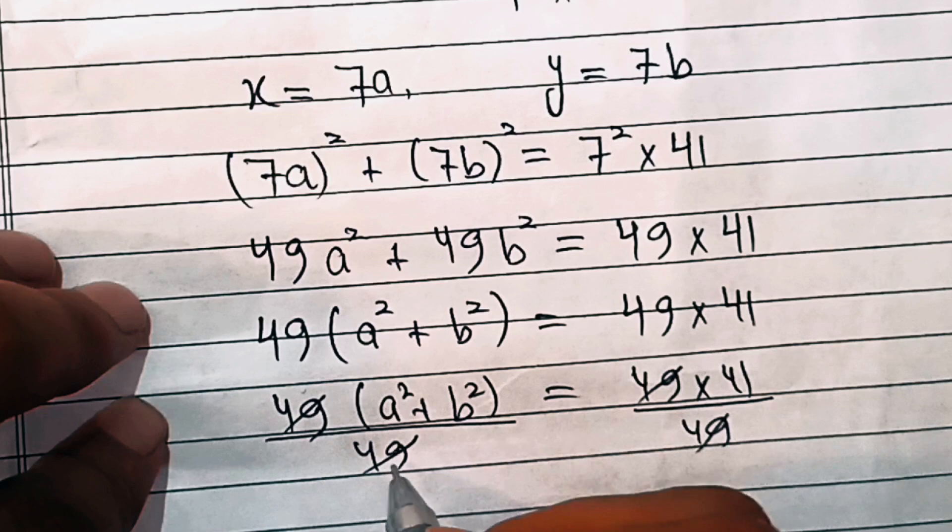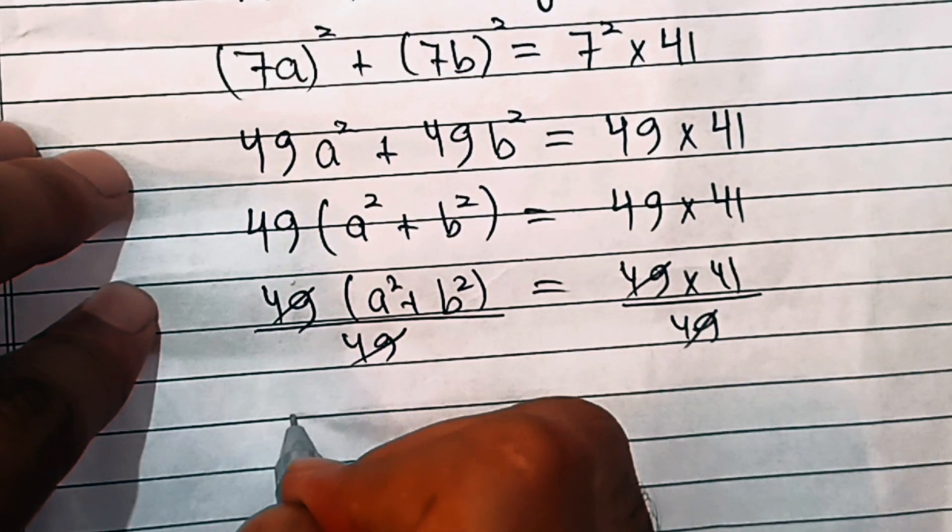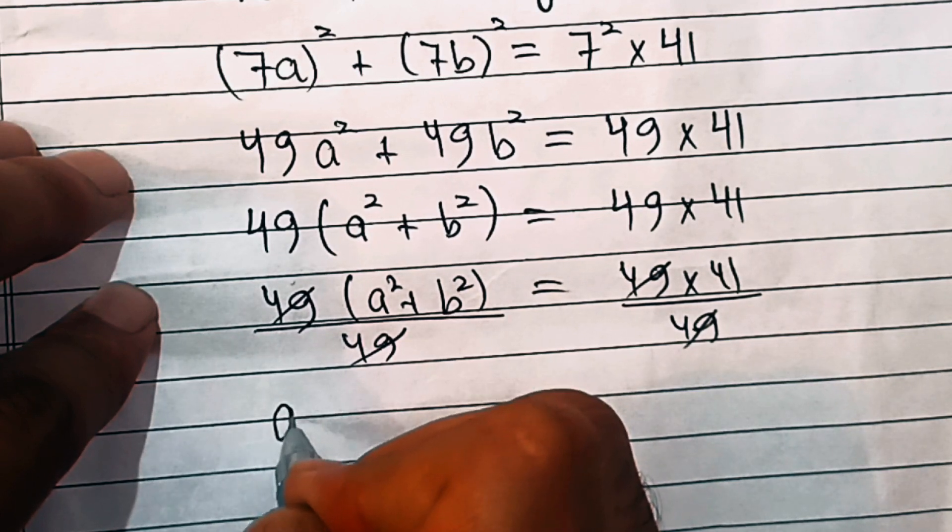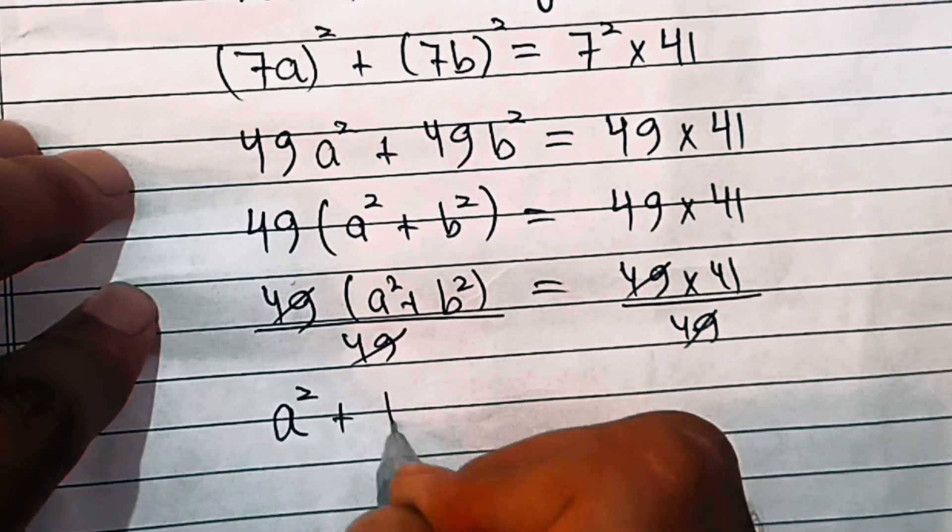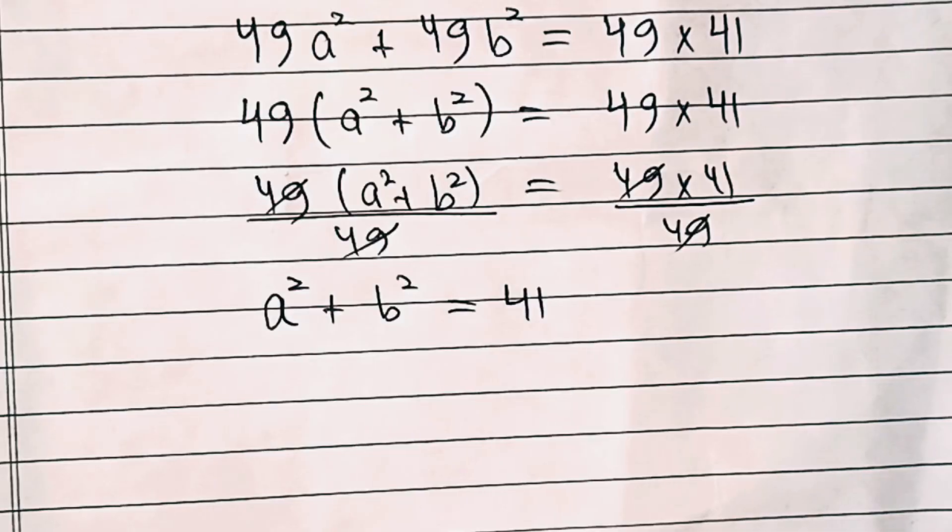So we are left with a square plus b square equal to 41. This equation has the same form as the original equation, but here the sum of two square numbers is 41.